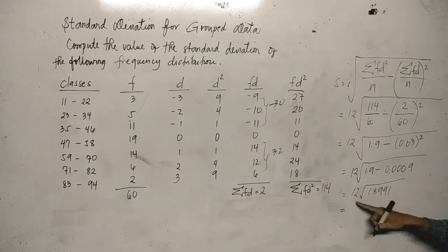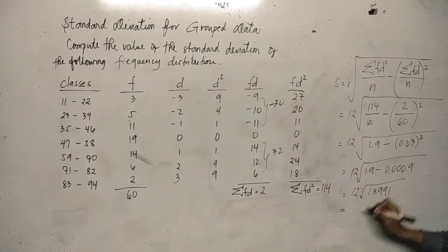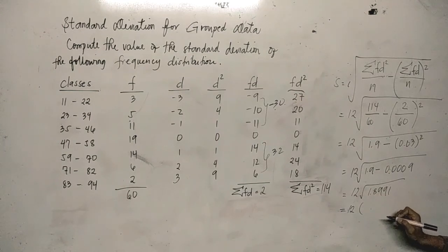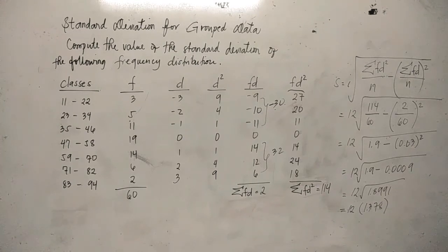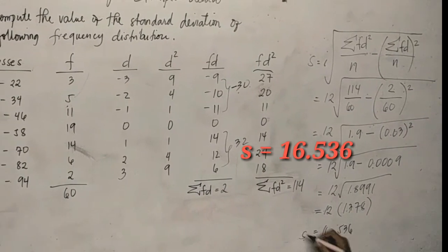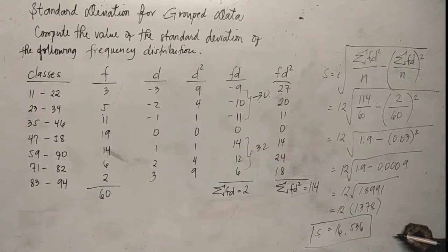So 12, then square root of 1.8991. Let's extract this on calculator. The square root of 1.8991 becomes 1.378. Then multiply: 12 times 1.378 becomes 16.536. Meaning, our standard deviation is 16.536.